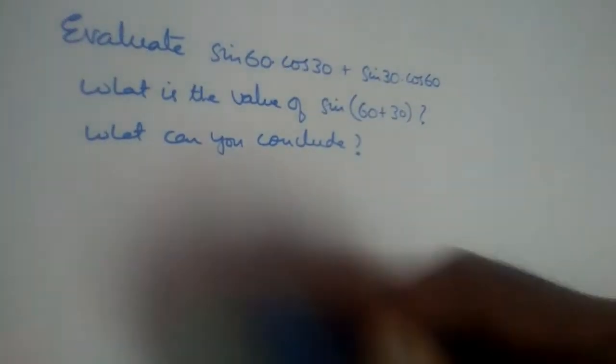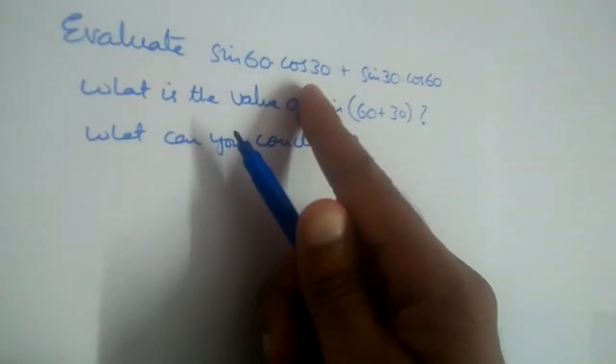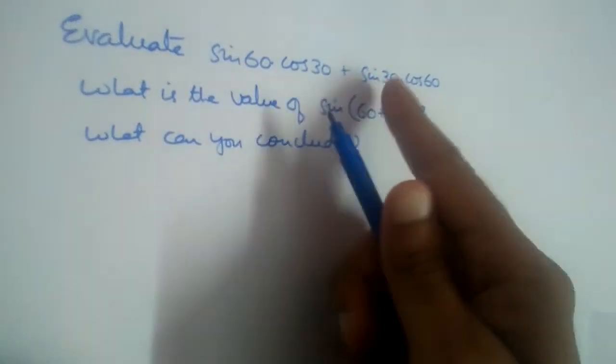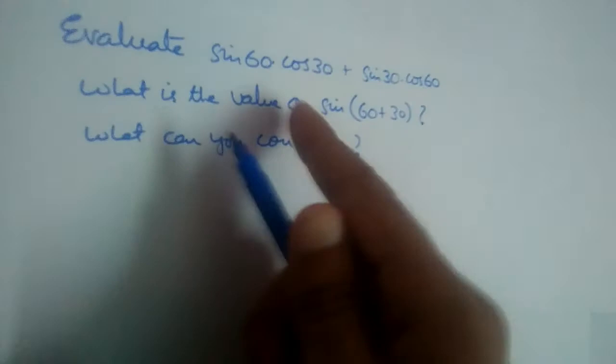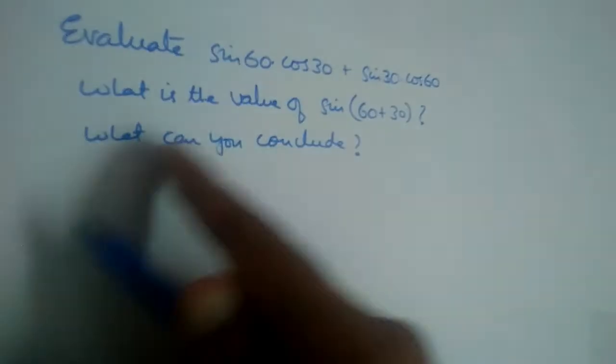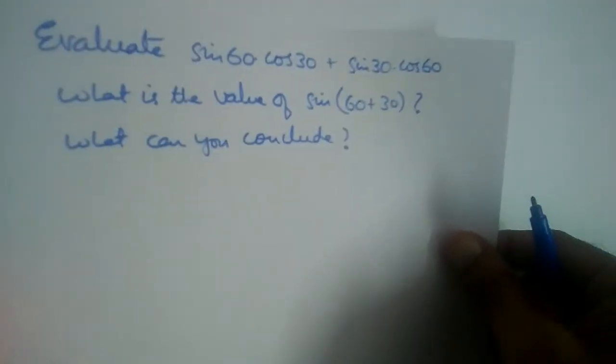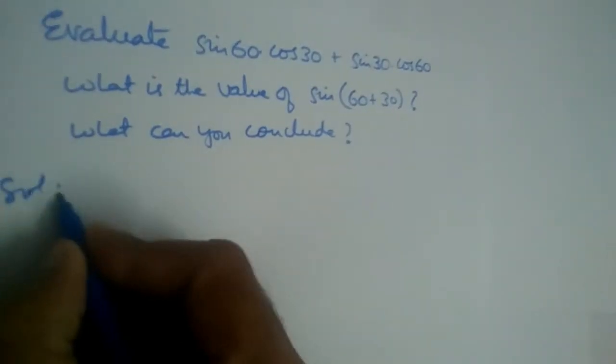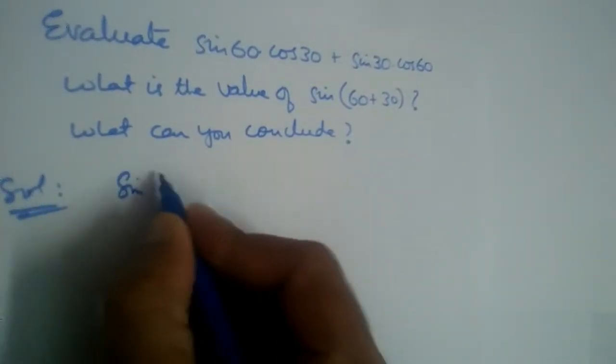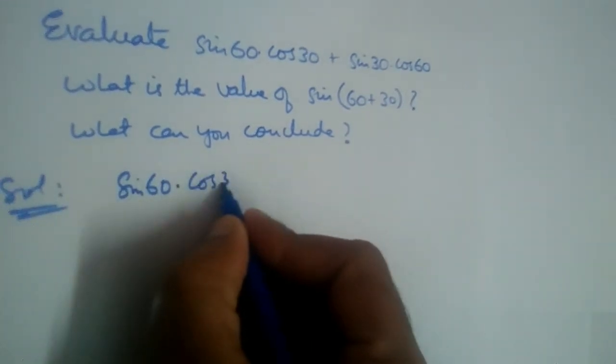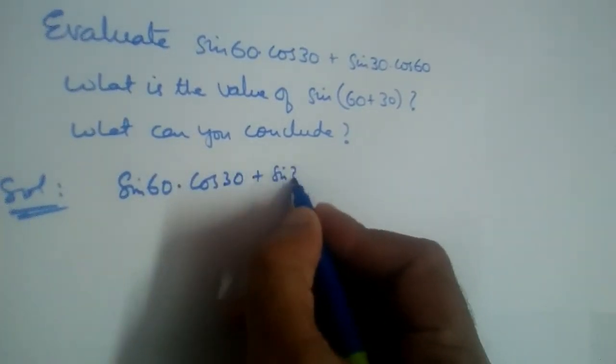We have this problem here: evaluate sin 60 cos 30 plus sin 30 cos 60. What is the value of sin(60 + 30) and what can you conclude? Let us simplify sin 60 cos 30 plus sin 30 cos 60.